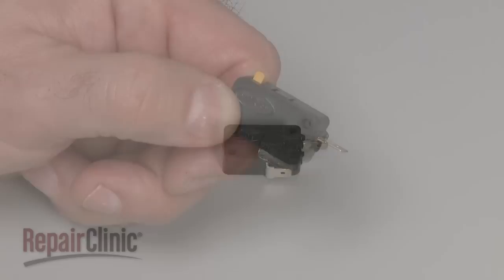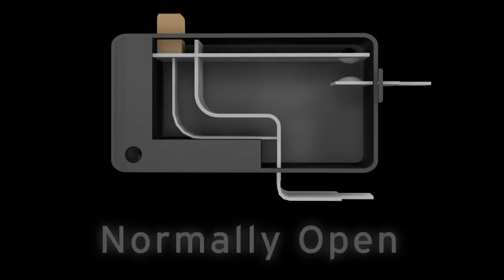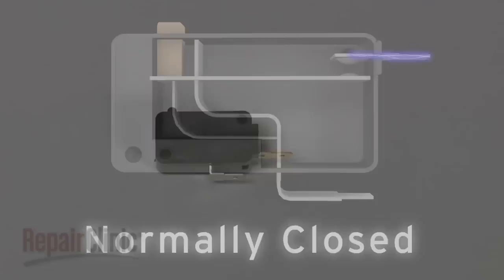Before you begin, make sure the switch you're testing has been removed from the appliance. Two terminal switches will either have continuity before the switch is actuated or after. If the switch has continuity after actuation, it is considered to be normally open. If the switch has continuity before actuation, it is considered to be normally closed.